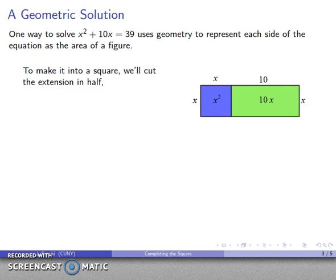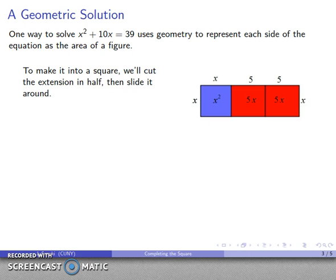Well what I want to do is I want to make it a square, and this is why this method is actually called completing the square. Now to do that, what we're going to do is we're going to take this extension, we're going to cut it in half. And then, well what's the key property of a square? The length and width are equal. And so here I originally had an x plus 10 width by x height. I want to make this at least have equal width and height. So what I'm going to do is after I cut this piece in half, I'm going to slide this piece over and attach it to the bottom there.